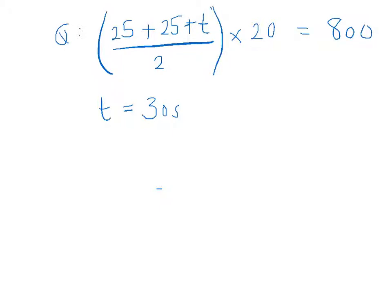Now, if the value of little t is 30 seconds, then that tells me, looking back at my graph, that the entire travel time must be 55 seconds. See if you can use that information to write an expression for the area under the graph P.